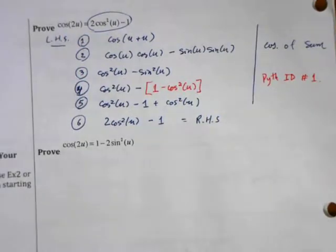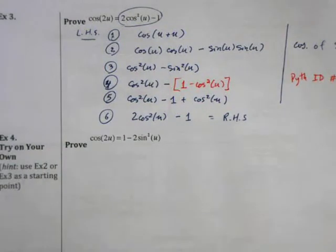I've written another problem here, the third version of the cosine of a double angle. You should try this on your own. It's giving you a hint to use examples two or three as a starting point. That ends that example. Thank you for watching. See some of the other videos on how to prove power reducing identities and half angle identities.